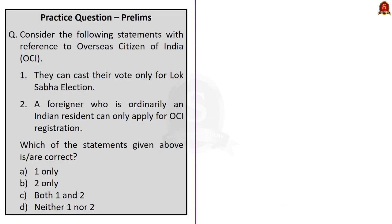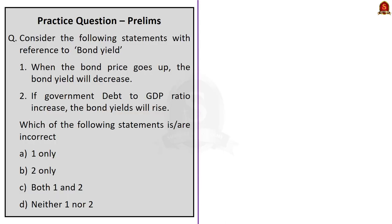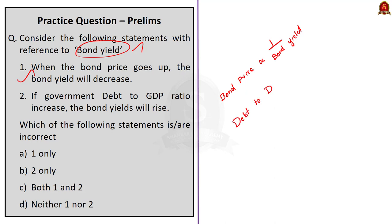Now let us take up the practice prelims questions. Question 1 is about bond yield — two statements are given, find the incorrect one. In our discussion, bond price and bond yield are inversely proportional, so when bond price goes up, bond yield decreases — statement one is correct. Government debt-to-GDP ratio is directly proportional to bond yield, so if debt-to-GDP increases, bond yield will increase — statement two is also correct. Since both statements are correct and the question asks for incorrect statements, the correct answer is option D — neither one nor two.